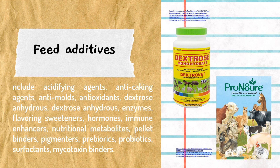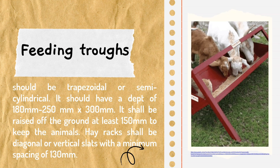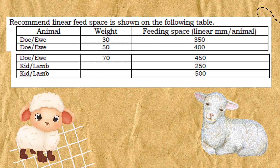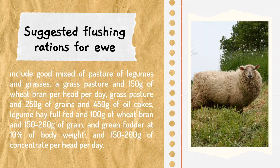Feed additives include: acidifying agents, anti-caking agents, anti-molds, antioxidants, and dextrose. For feeding facilities for goats and sheep, the feeding trough should be trapezoidal or semi-cylindrical with a depth of 180 mm to 250 mm by 300 mm, as shown in the recommended linear feed space table. For the water facility, an open tongue drinking system requires 300 mm space for each 15 to 25 heads. Suggested flushing rations include a good mix of pasture of legumes and grasses.